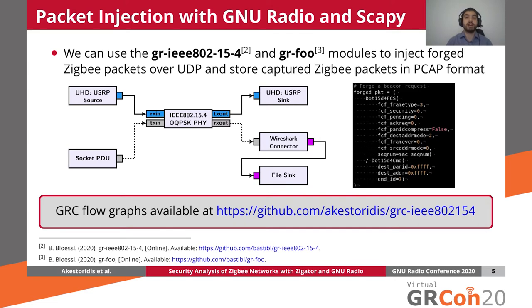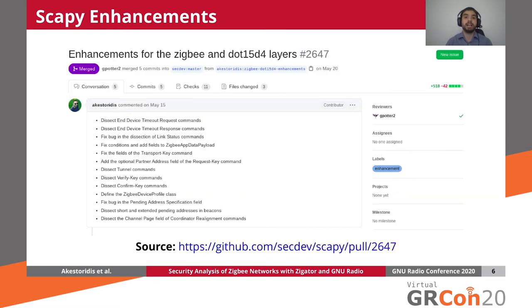Once we have forged our desired packet, we can send it over UDP to our software-defined radio for transmission. When we first started our research project, the latest version of SCAPY was version 2.4.3, which provided support for several different packet types and header fields used in Zigbee networks. However, during our experiments we captured several packets that were not properly dissected, so we implemented the required enhancements for SCAPY and submitted them as a pull request which was later merged into SCAPY's master branch.